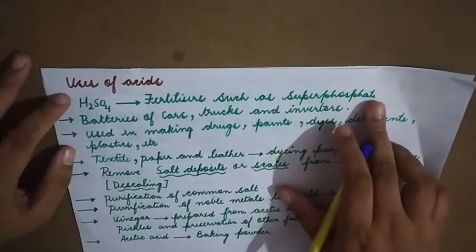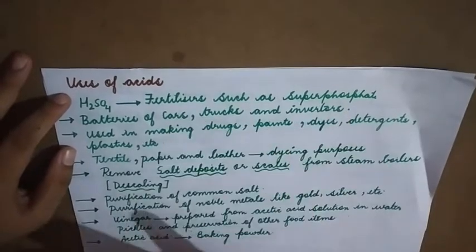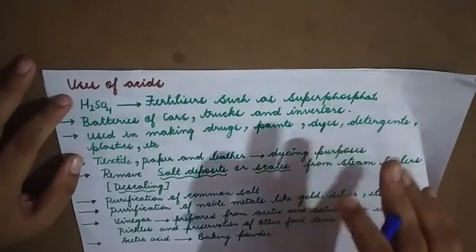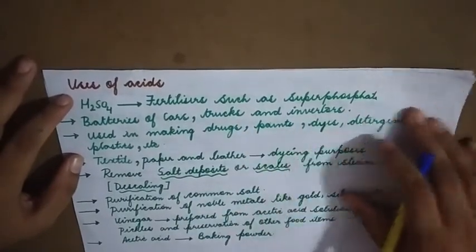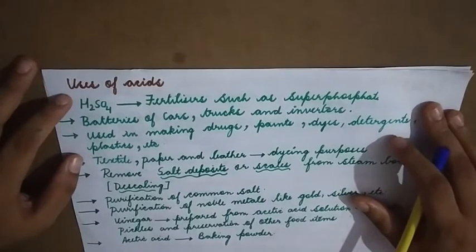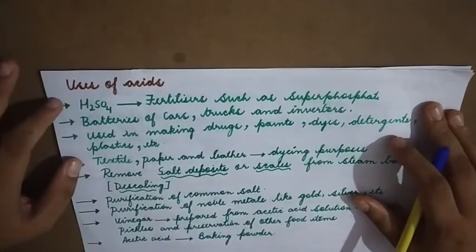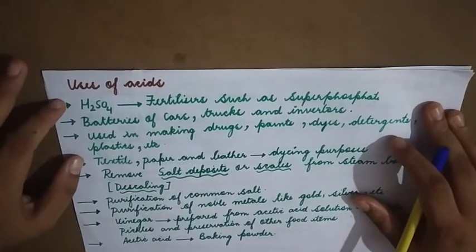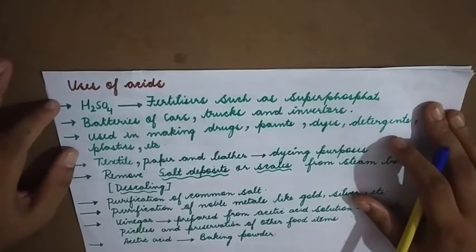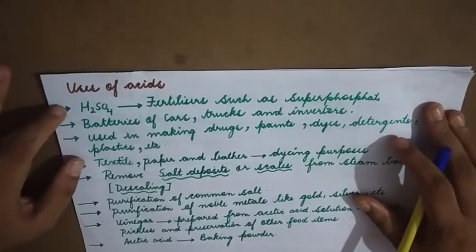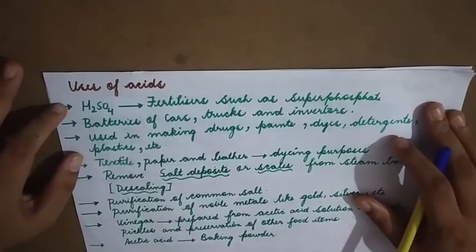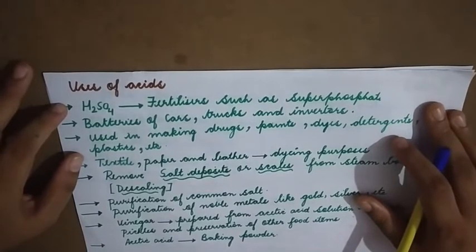What is superphosphate? It is a fertilizer. Acid is also used in batteries of cars, trucks, and inverters. In batteries, chemical energy is converted into electrical energy, so acid is used to generate energy — it is used in the generation of energy.